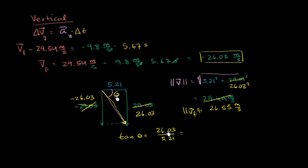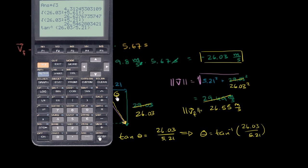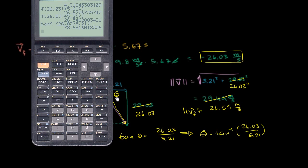Or we could say, if we take the inverse tangent of both sides of this, that the angle is equal to the inverse tangent, or the arc tangent, of 26.03 over 5.21. And that gives us the inverse tangent of 26.03 divided by 5.21, gives us roughly 78.7 degrees.